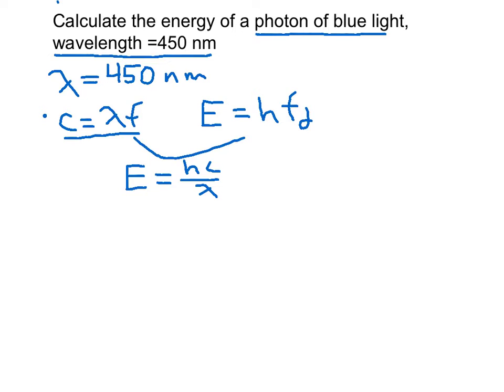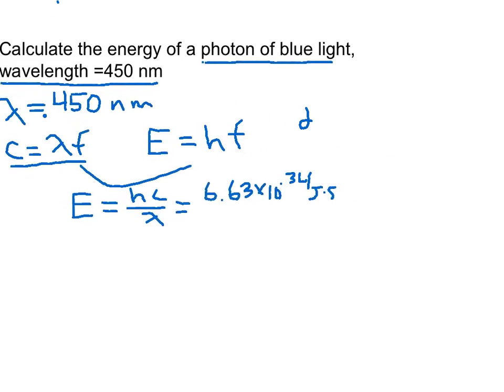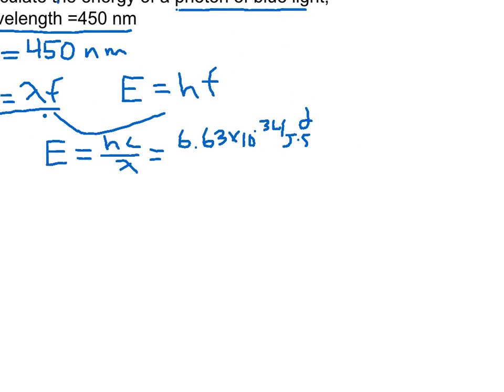And we can substitute, right? Because H is a constant, C is a constant, and we have the wavelength. So H is equal to 6.63 times 10 to the negative 34th joules per second. And the speed of light is 3.0 times 10 to the 8th meters per second.